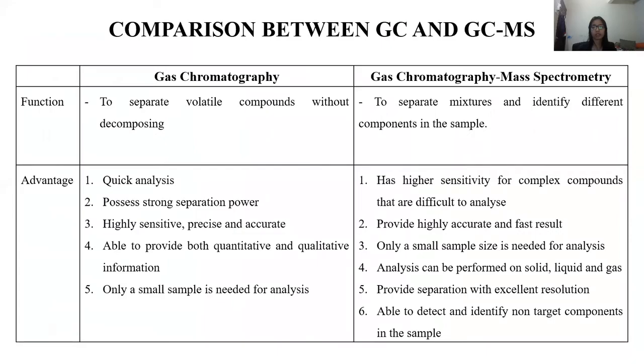Next is the comparison between GC and GC-MS. In this part, I'm only going to highlight the main difference between these two techniques since it should have been explained earlier, the functions and advantages and everything. So in terms of function, the main difference is for GC, it's used for separation. But for GC-MS, it can separate and also identify the components in the sample.